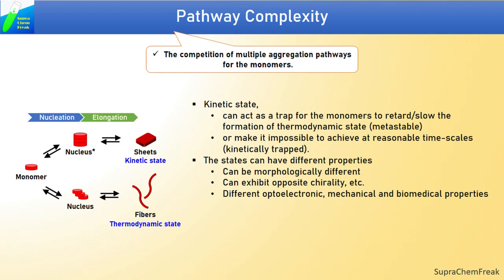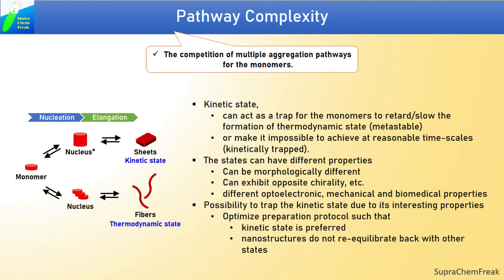graphene is a kinetically trapped state of carbon and diamond is its thermodynamically most stable state. The two provide distinct properties. Similarly, in supramolecular polymers, the states can have different properties such that they can be morphologically different, exhibit opposite chirality, or show different optoelectronic, mechanical, and biomedical properties. In supramolecular polymerization, there is a possibility to trap the kinetic state to explore and extract interesting properties.